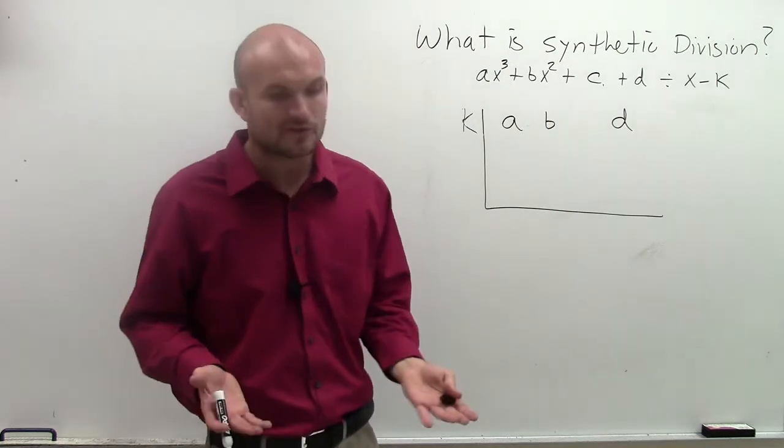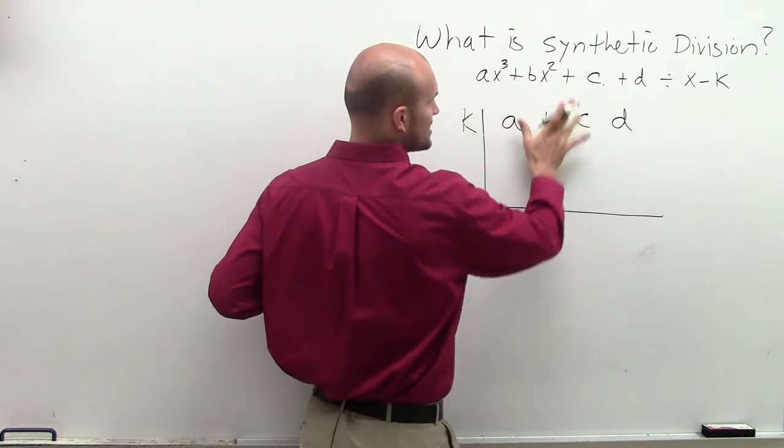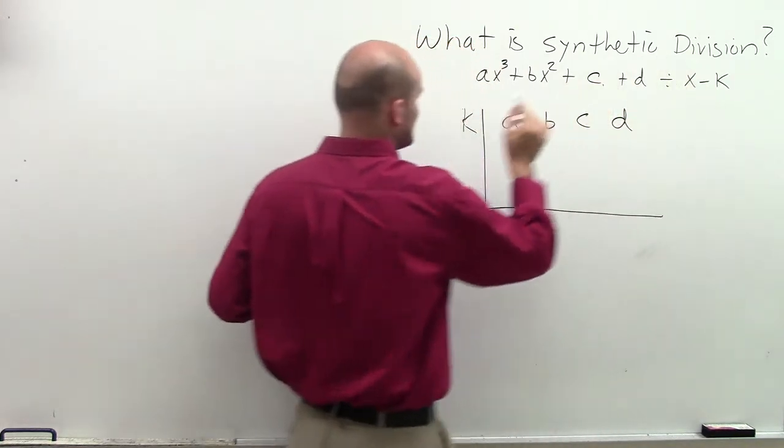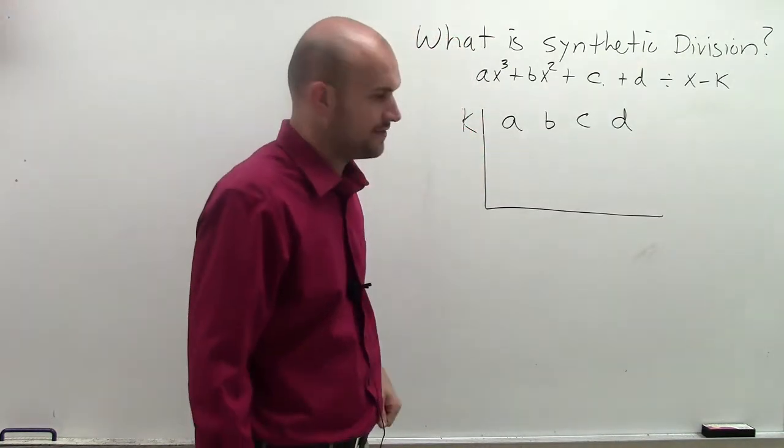So really, kind of the first steps that we're going to do is, when doing synthetic division, you take the coefficients and list them. And then you take the opposite of k, or x minus k, and set it outside of there.